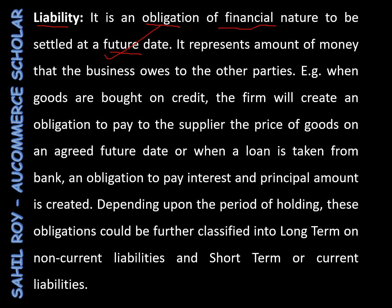When goods are bought on credit, the firm will create an obligation to pay to the suppliers the price of goods on an agreed future date. Or when a loan is taken from the bank, an obligation to pay the interest and principal amount is created.